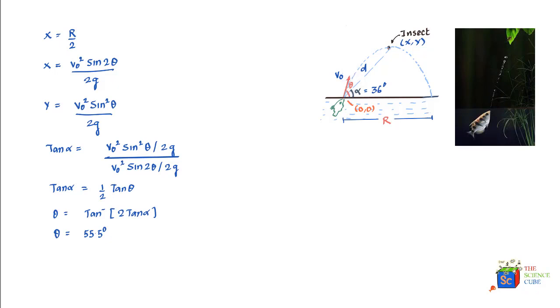Now you'd also notice something interesting that nowhere in derivation of the angle did we make use of this distance d, which shows that this distance d doesn't really matter. What matters is the initial angle that the straight line between the mouth of the fish and the insect makes with the horizontal.